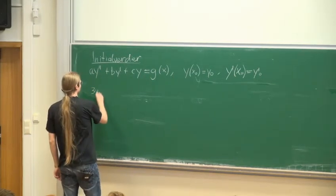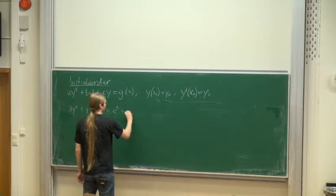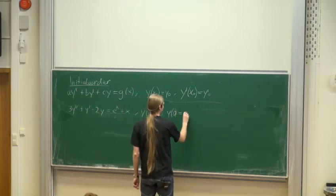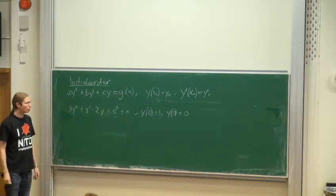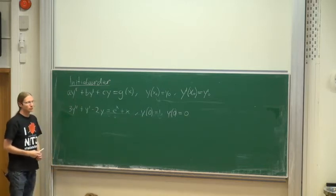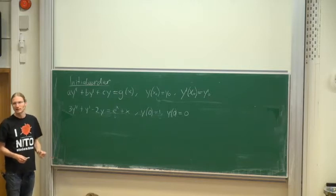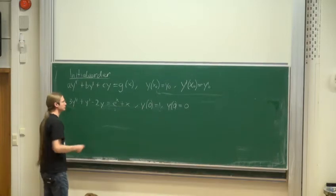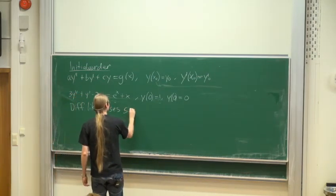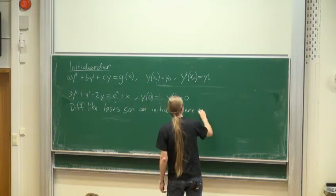Med tall kan det for eksempel se slik ut: 3y dobbeltderivert pluss y derivert minus 2y lik x, med y av 0 lik 1 og y derivert av 0 lik 0. De to opplysningene til høyre er initialverdiene. Måten man behandler differensialligningen på når den har initialverdier er stort sett som ellers – og så er det én ting til man gjør til slutt. Differensialligningen løses som om initialverdiene ikke var der.